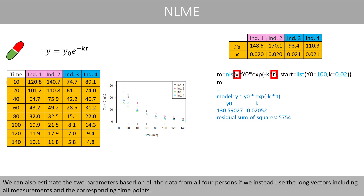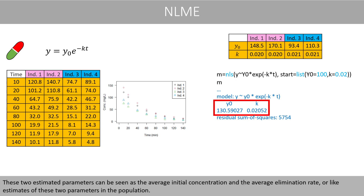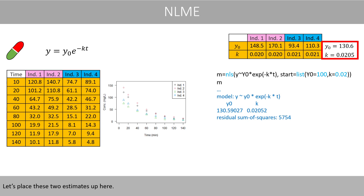We can also estimate the two parameters based on all the data from all four persons, using the long vector including all measurements and the corresponding time points. These two estimated parameters can be seen as the average initial concentration and the average elimination rate — we want estimates of these two parameters in the population. Let's place these two estimates up here.